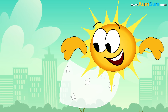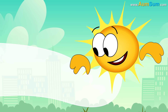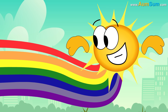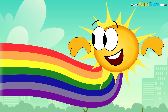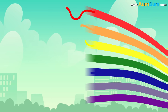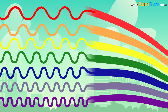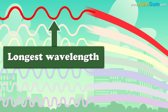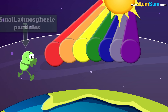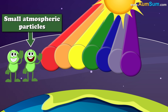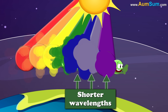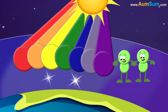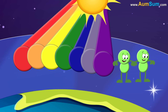Sunlight, or white light, is a combination of all visible colors of light. Each color has a different wavelength. Red light has the longest wavelength. Small atmospheric particles that exist in the sky scatter shorter wavelengths more efficiently. Hence, the sky appears blue.